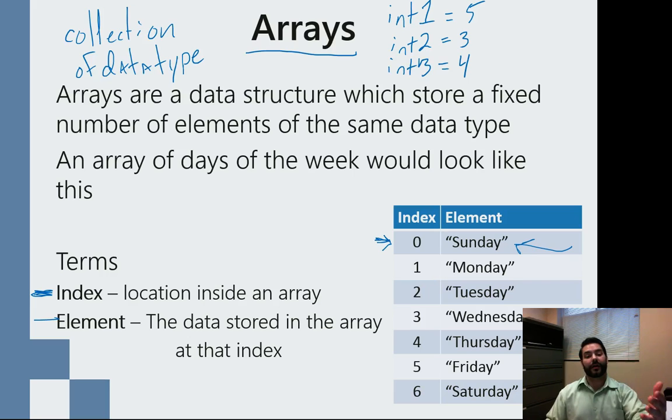So as I move through each one of my elements that have been added into my array, I go up to the next index. So if we think about the days of the week, Sunday starts at 0. Sunday has an index of 0. Monday would have 1, Tuesday would have 2, Wednesday would have 3, Thursday 4, Friday, Saturday, 5 and 6, respectively.